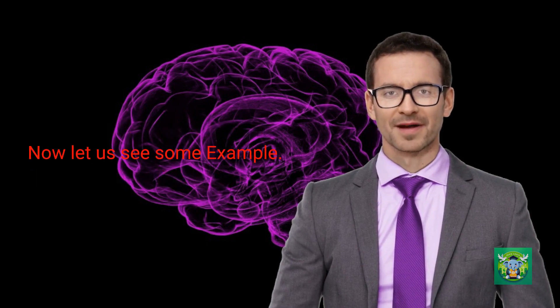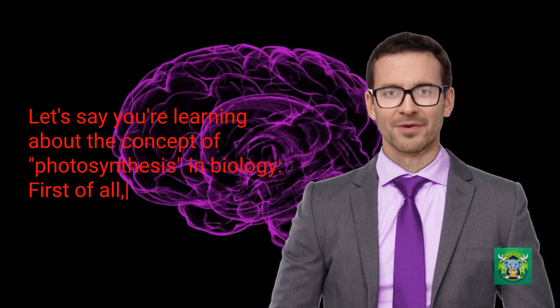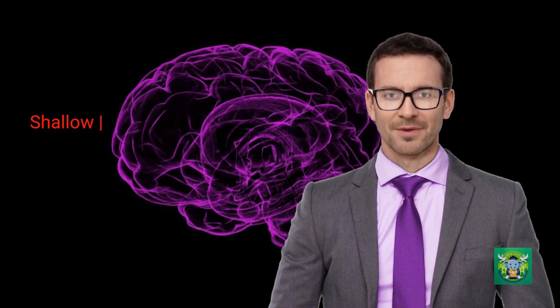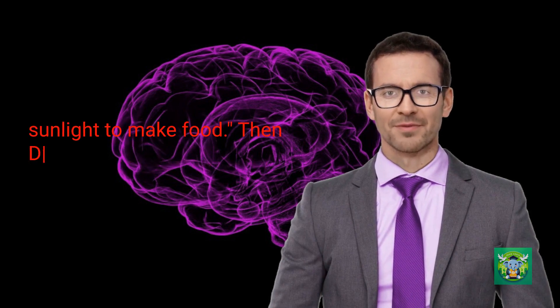Now let us see some examples. Let's say you're learning about the concept of photosynthesis in biology. First of all, shallow processing: you might just memorize the definition—the process by which plants use sunlight to make food.